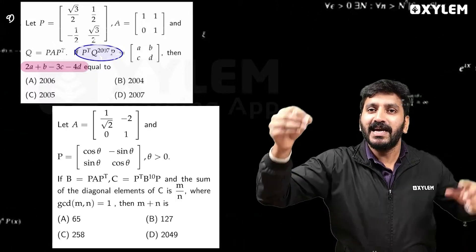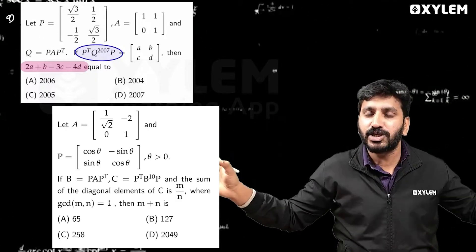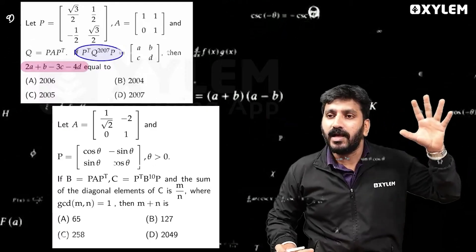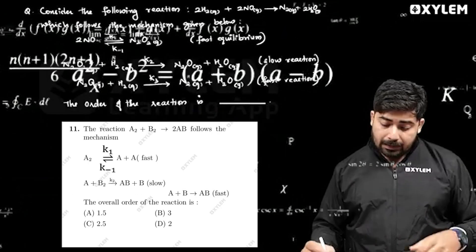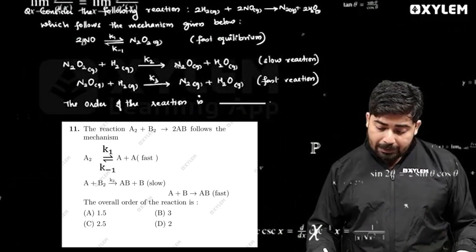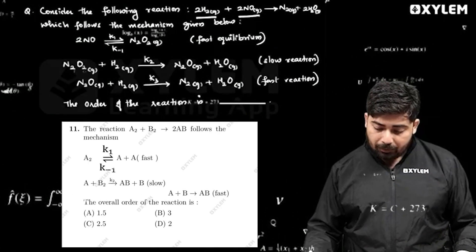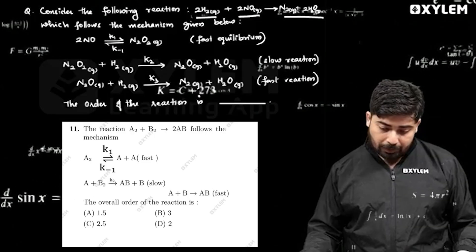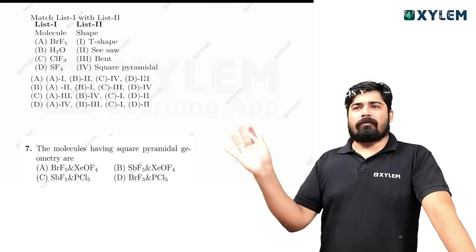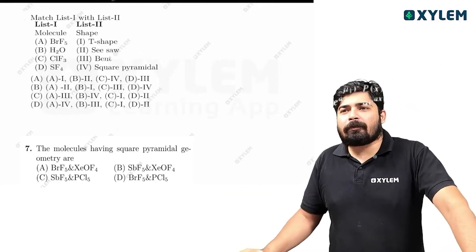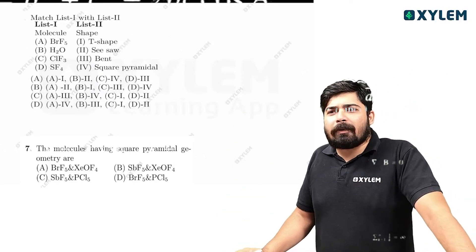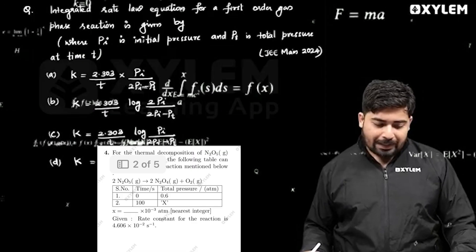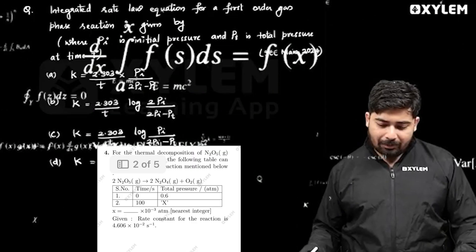This is a question that JEE is doing — the same exam. Consider the following reaction: 2H2 plus 2NO giving N2 plus 2H2. BRF5 — square planar. We have to ask the question of the integrated rate equation.